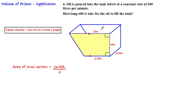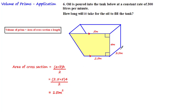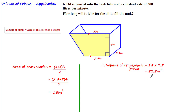The opposite parallel sides a and b are 2.5 and 5, and the perpendicular height h is 4. Substituting: (2.5 + 5) × 4 ÷ 2 = 15 meters squared. Multiplying by the length of 3.5 gives a volume of 15 × 3.5 = 52.5 meters cubed for the trapezoidal prism.